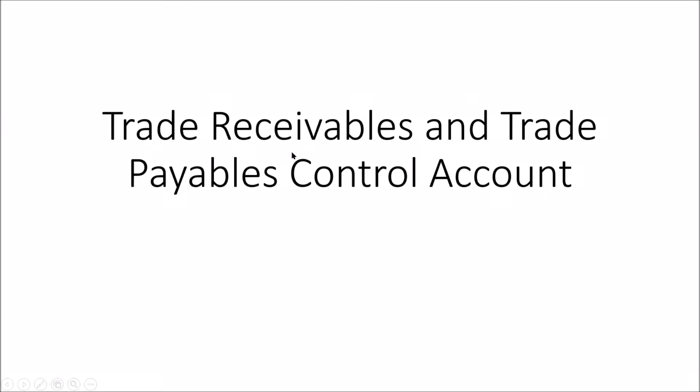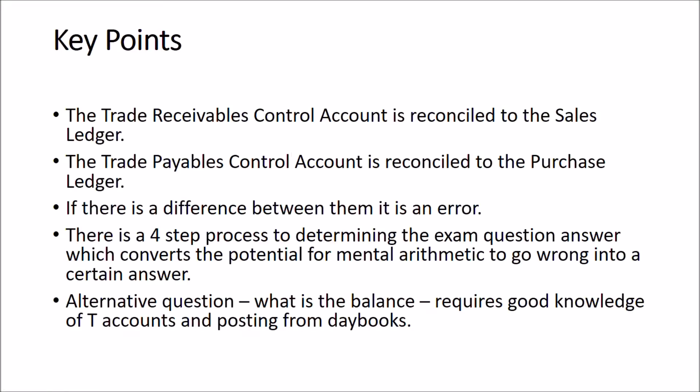Key points in this chapter: the receivables control account is reconciled to the sales ledger, and the trade payables control account is reconciled to the purchase ledger. If there is a difference between them, that is an error, because the trade receivables control account should always reconcile to the sales ledger, and the trade payables control account should always reconcile to the purchase ledger.